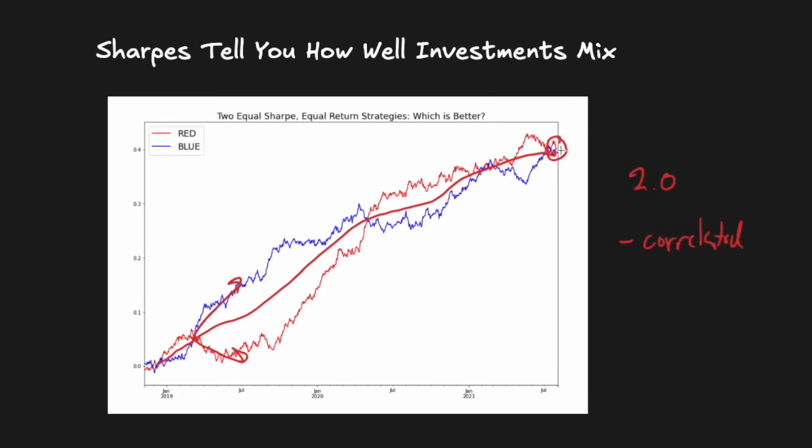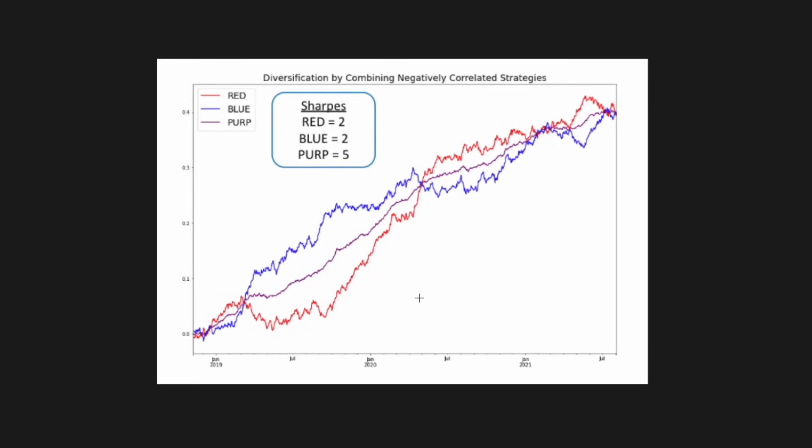In this graph, 'perp' does exactly this. It's a 50-50 portfolio of red and blue. It looks a lot smoother, right? Indeed, while the Sharpe of red and blue were each 2, perp has a gigantic Sharpe ratio of 5, and this is all while maintaining the same solid return. If we had only looked at returns as a performance metric, we wouldn't even be able to tell that perp is any better than red or blue, and the concept of creating perp as a better investment would never even be on our radar.